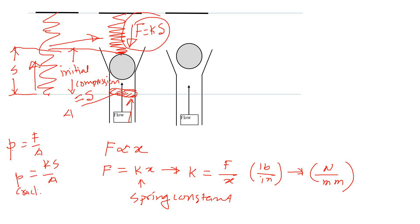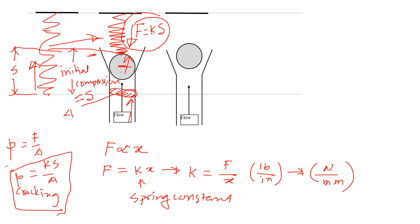At cracking pressure, it will not produce any flow - it will just produce enough force to balance the initial compression. If you apply cracking pressure, there will be no flow, but the ball will be kind of floating. Just a little more pressure and the ball will go up and flow will start.